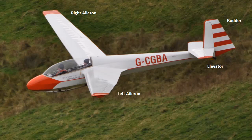Here's the same picture again but this time I've labelled the main control surfaces. At the tail of the plane there is the rudder and the elevator which is across the back of the tail plane, and then on the wings there are the ailerons. The glider has other control surfaces that we'll cover in a later video.